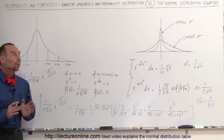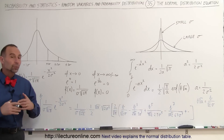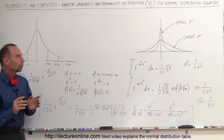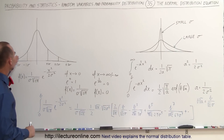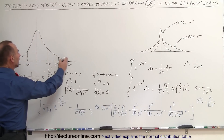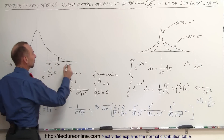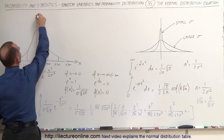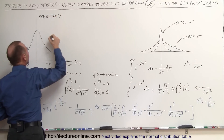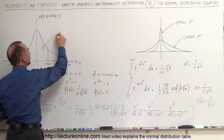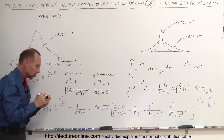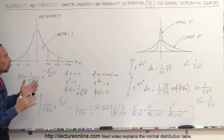Welcome to our lecture. In this video we're going to show you a little bit more about the normal distribution and especially about the normal distribution equation. Like we saw in the previous video, here is your normal distribution. The vertical axis is frequency, the horizontal axis is the value for x. The condition is that the area underneath the curve has to be equal to 1 — that is the condition for a normalized distribution function.